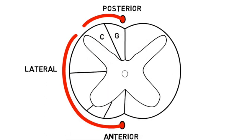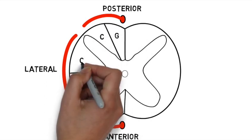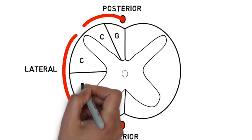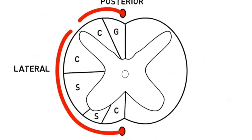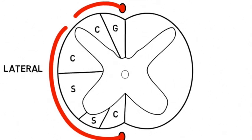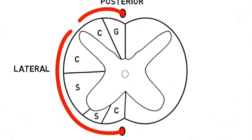So you have G, C for gracilis and cuneatus, C, S for lateral corticospinal and lateral spinothalamic, and S, C for anterior spinothalamic and anterior corticospinal. This is sometimes to be remembered as GCSE or GCS.